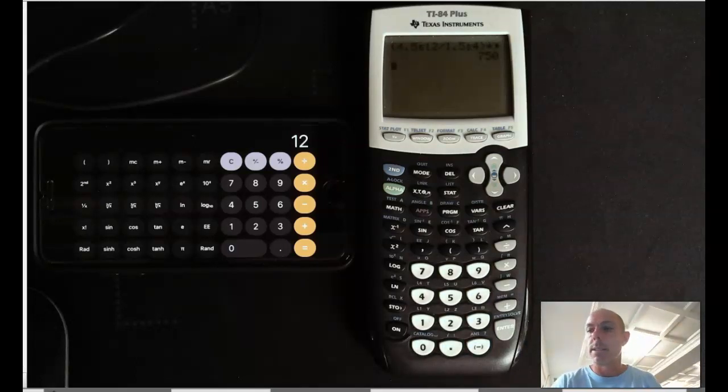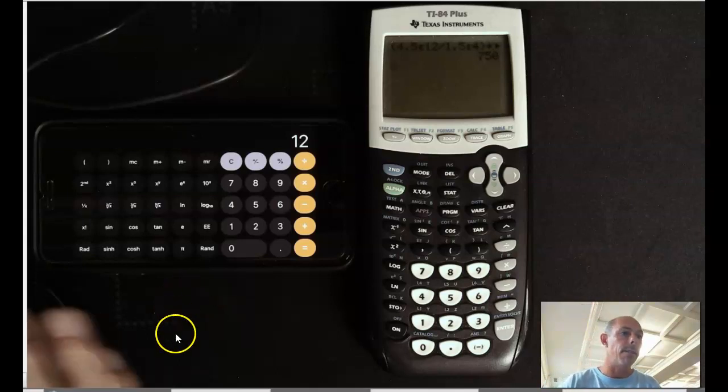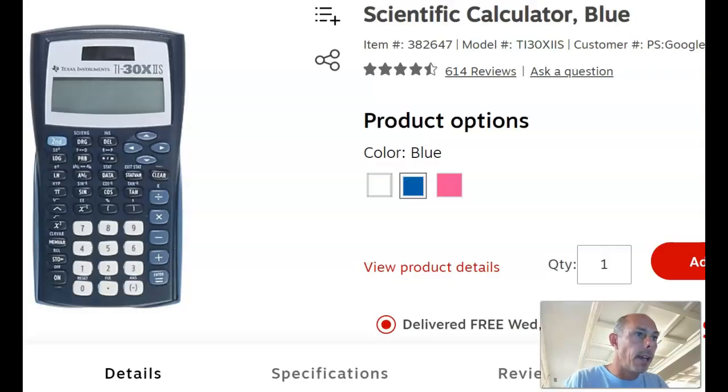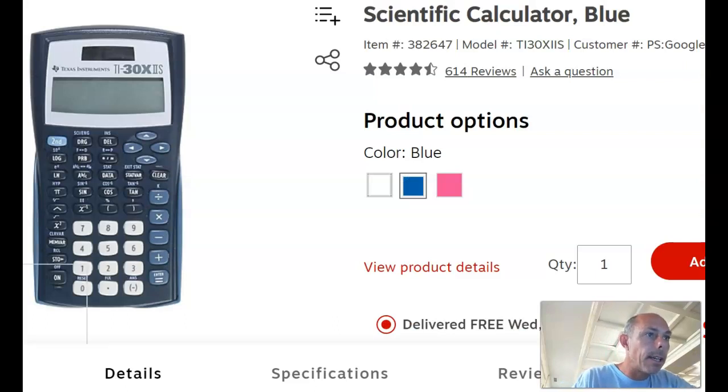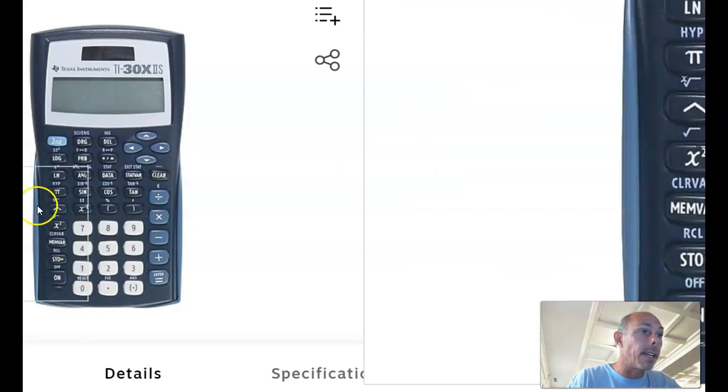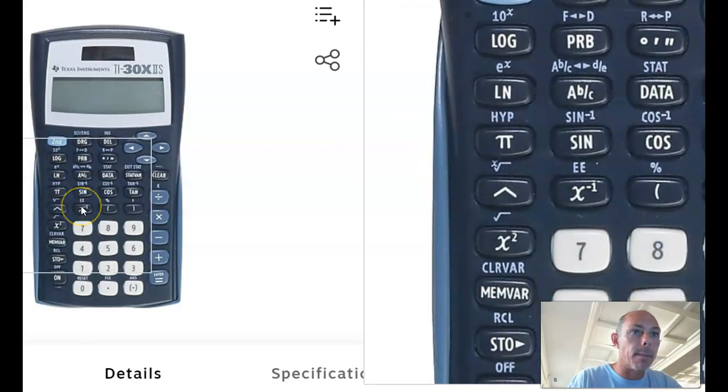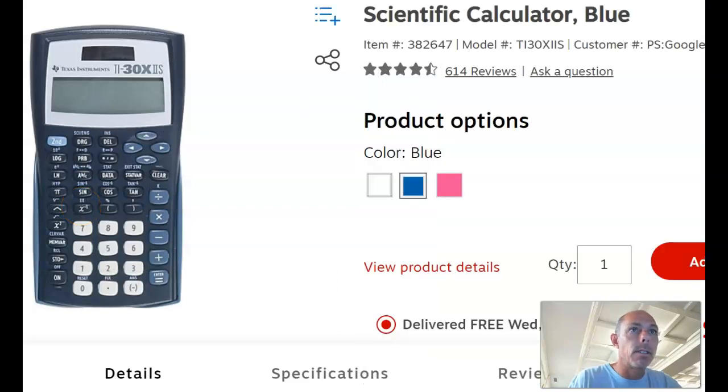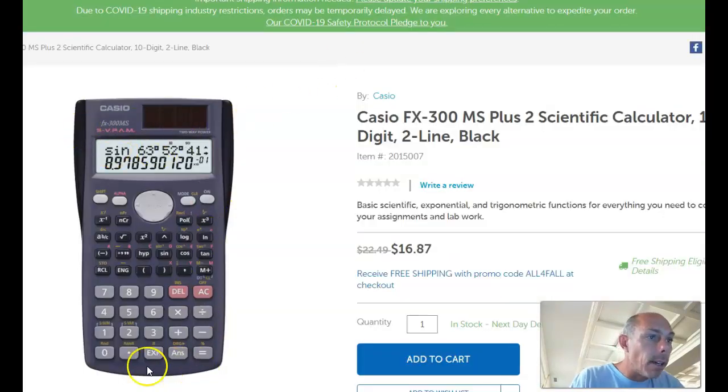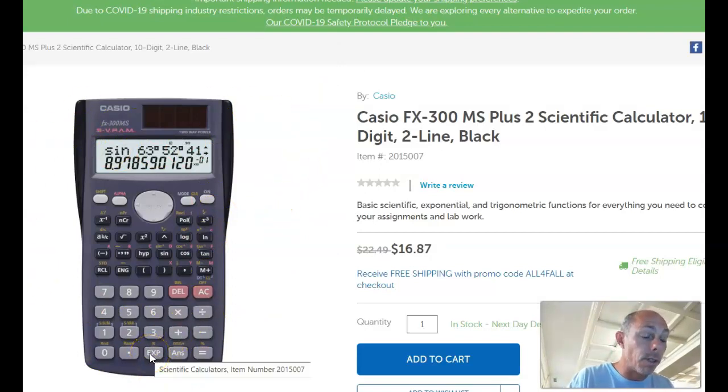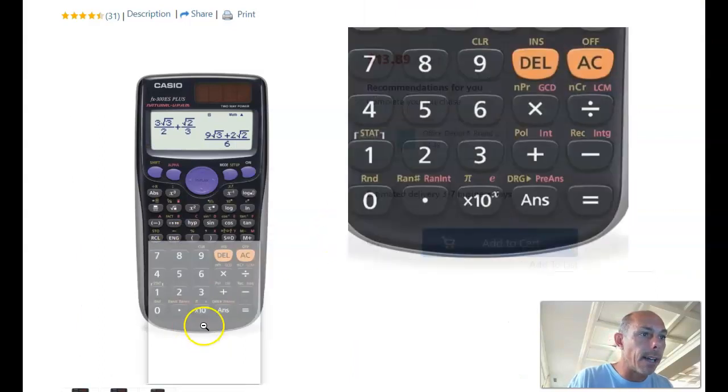And then if you have a different calculator, like this Texas instrument, it's also going to be an EE button. You're going to hit second. And then it's above the X to the minus 1 button. See that EE up there? So that's the Texas instrument. You've got a Casio, like I have a class set of in my room. Oh, how I miss you, classroom. You've got the EXP button, which means times 10 to the, so you just hit that button straight up. And then you've got a different Casio, a newer one. Instead of EXP, it's just times 10 to the X. Those all do the same thing. Please make sure you've found your scientific notation button on your calculator.